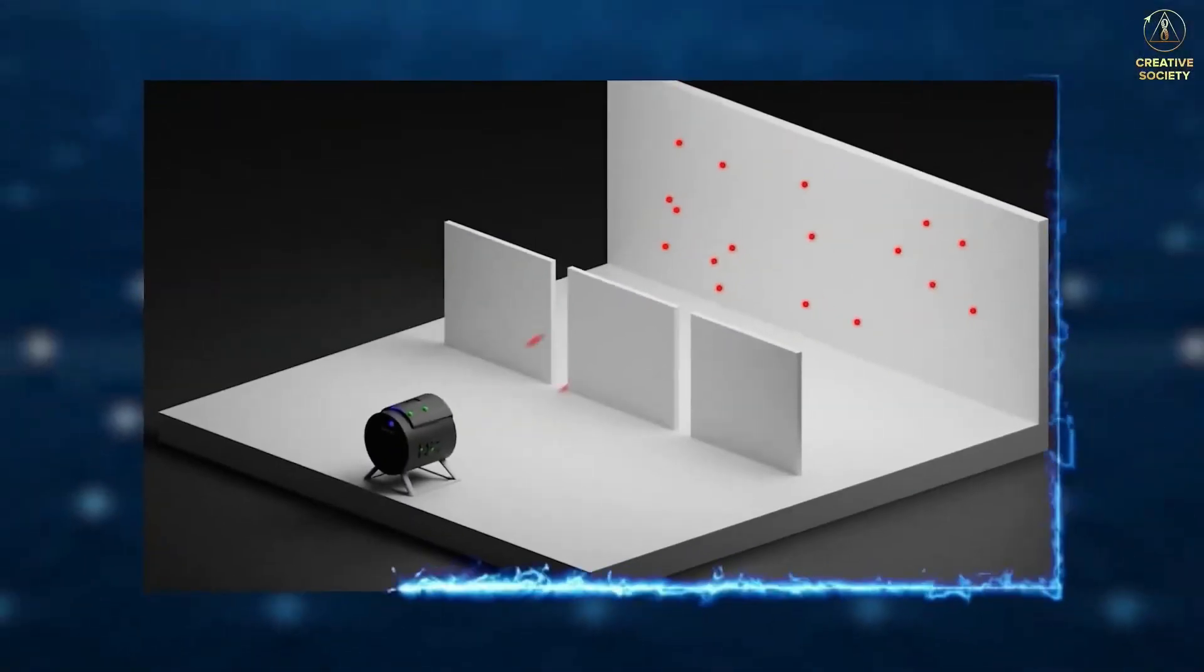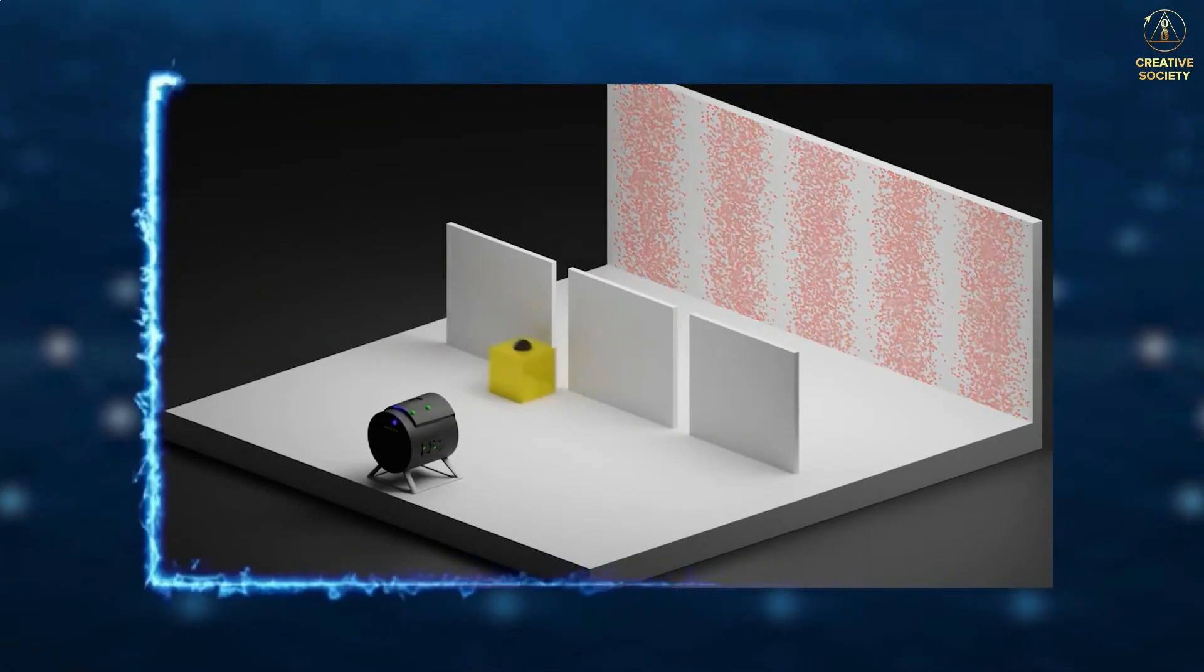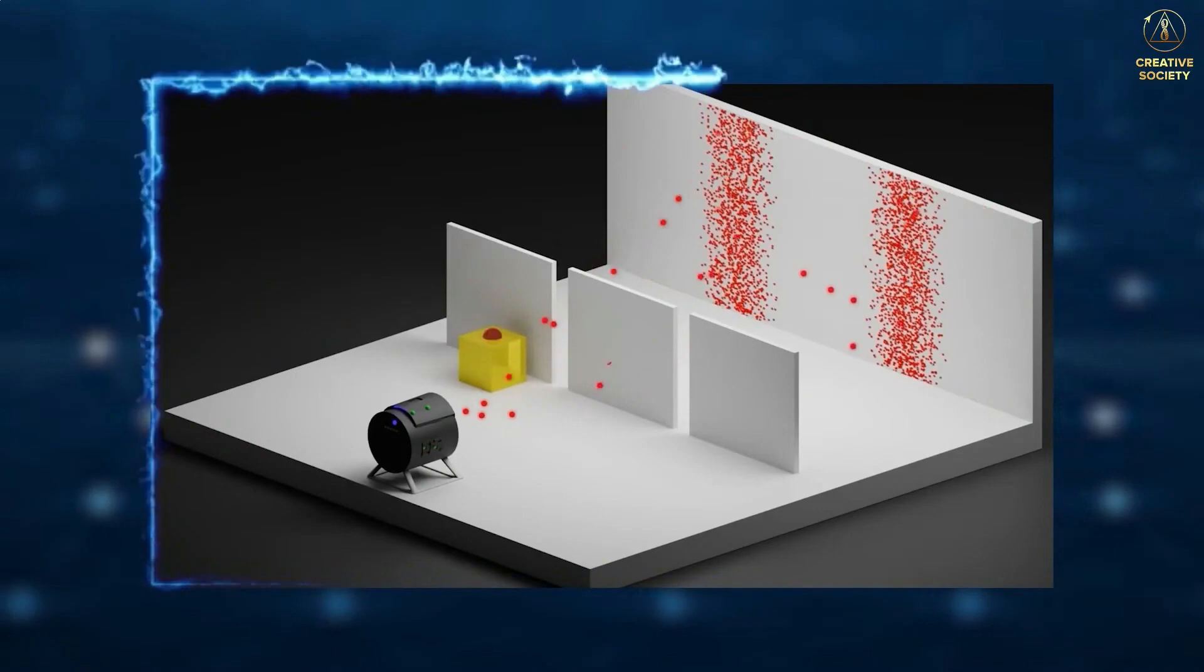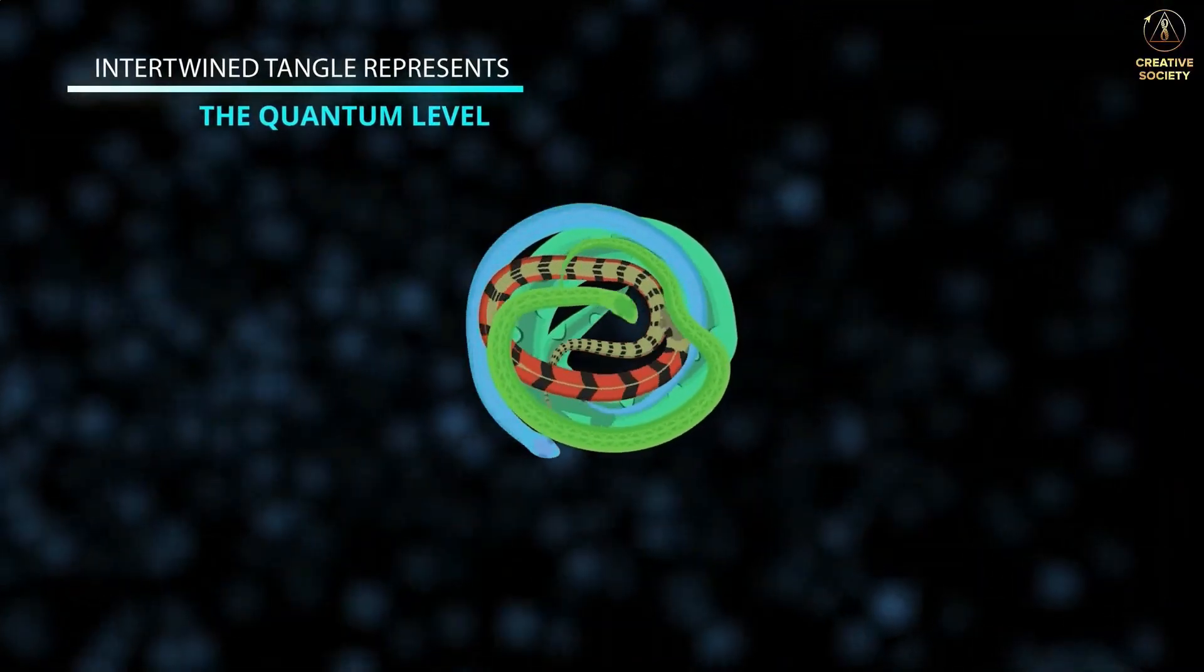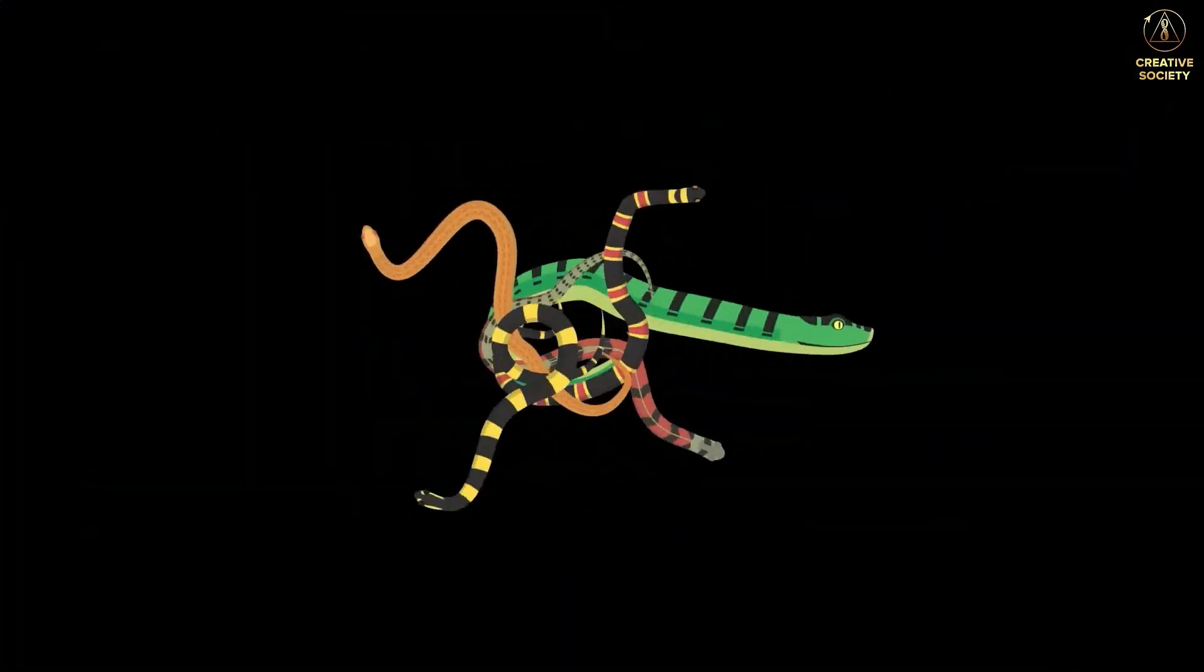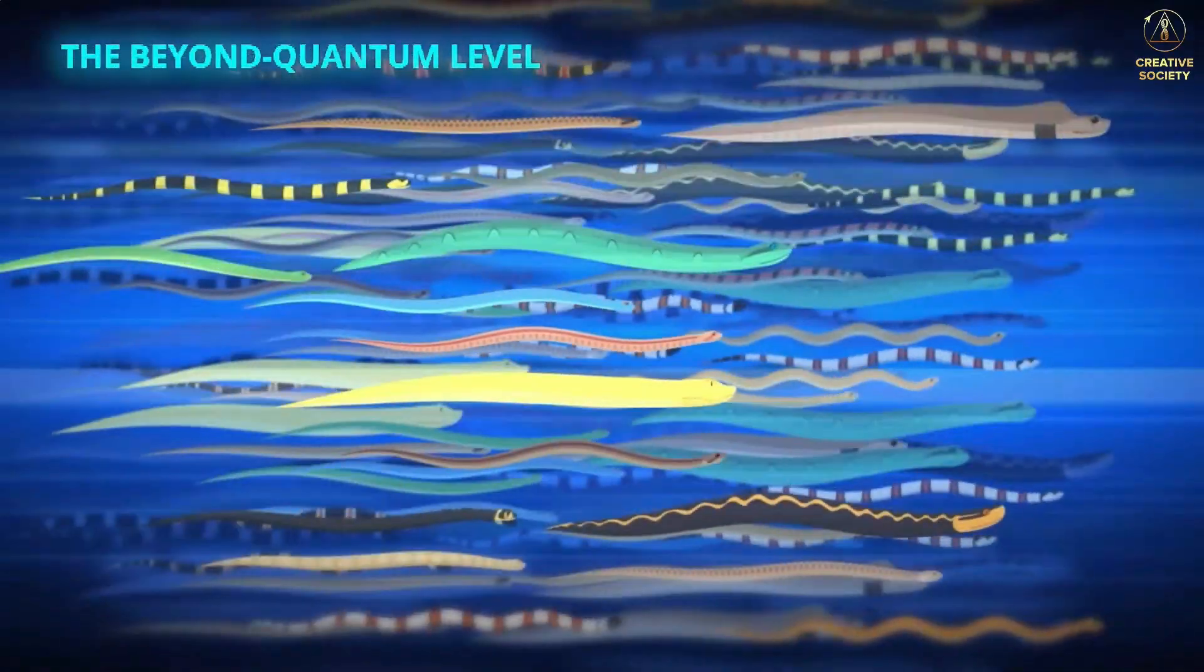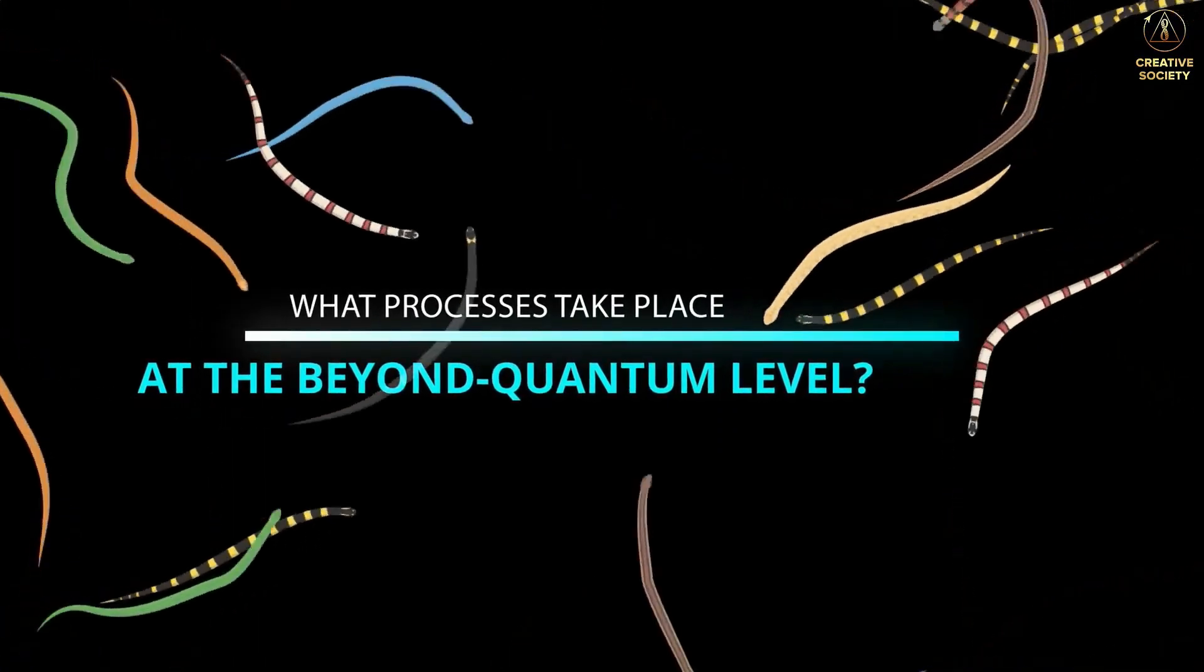This is clearly demonstrated by the double-slit experiment, in which a wave passed into a particle state when the conditions changed, in the presence of an observer. In essence, the intertwined tangle represents the quantum level, the level of particle manifestation, while short elastic waves, the snakes that make up everything, represent the beyond-quantum level. What processes take place at the beyond-quantum level?